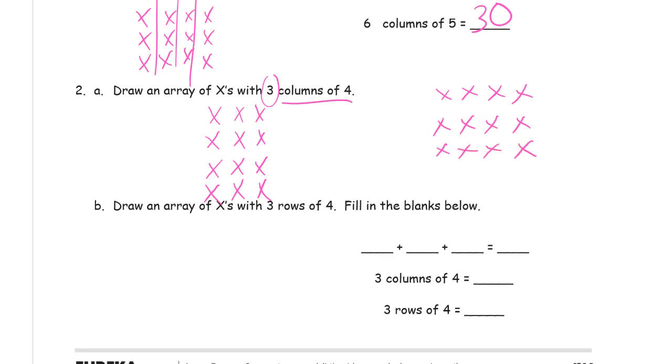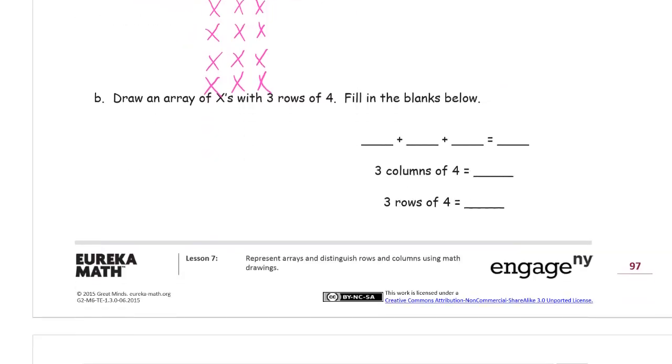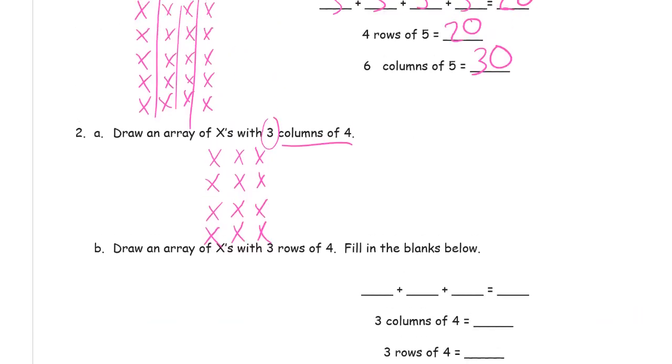And you draw three rows of four instead. This can get tricky and you can be thinking rows and drawing columns or usually it's columns and you draw rows. So just be careful and then look at it after you're done and say do I have three columns of four.